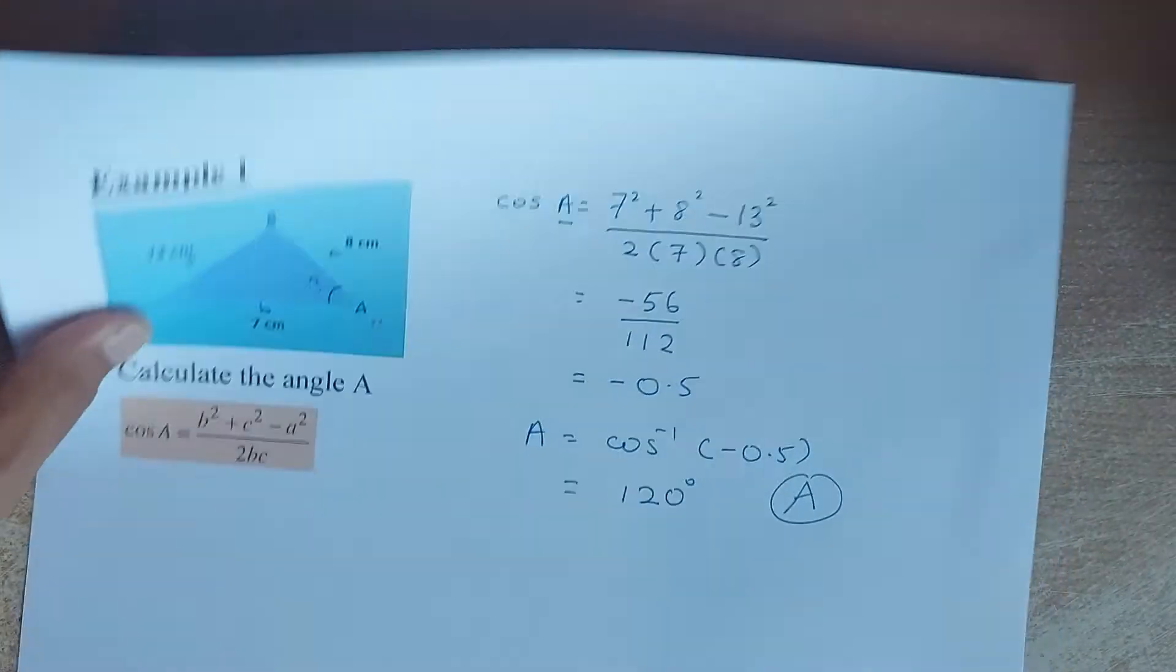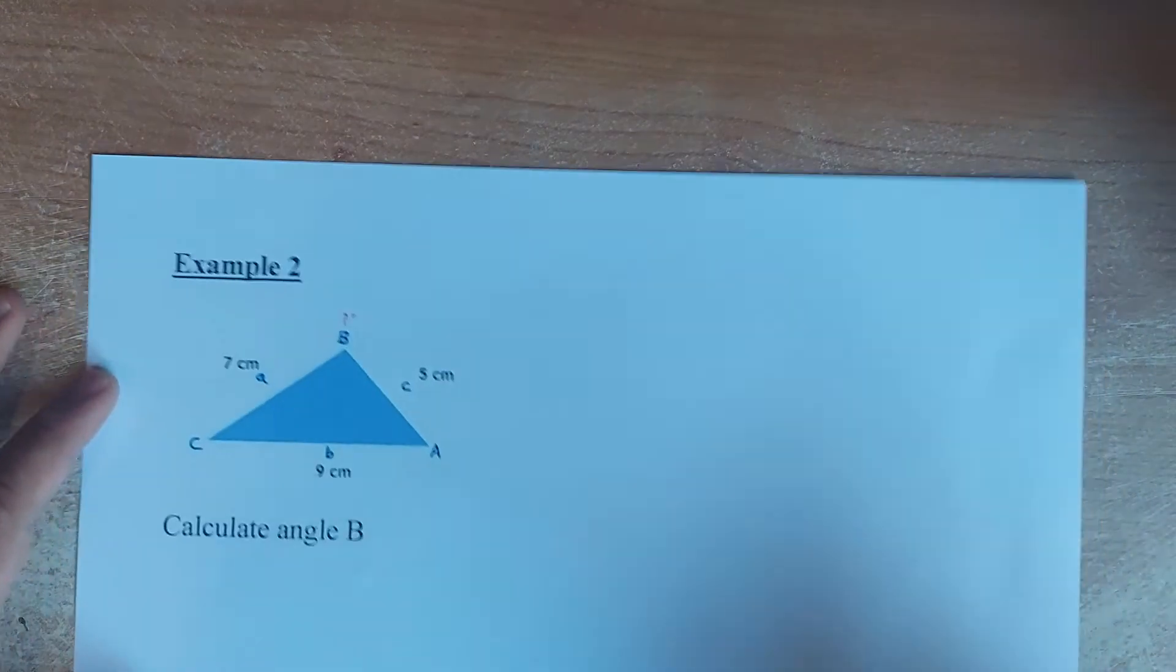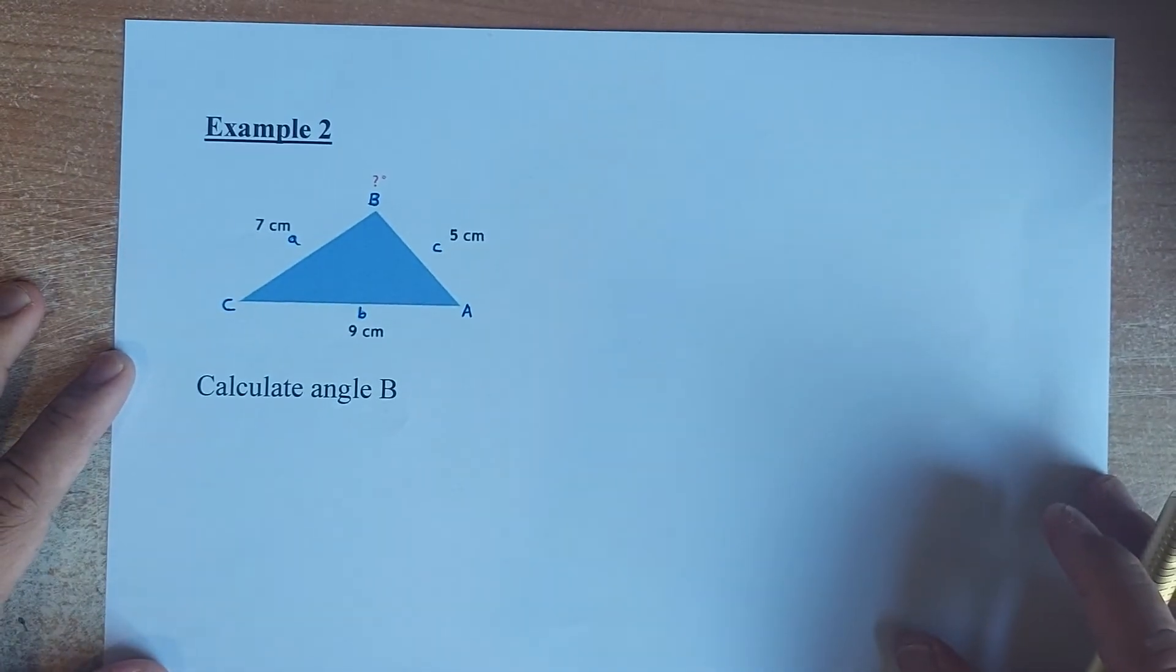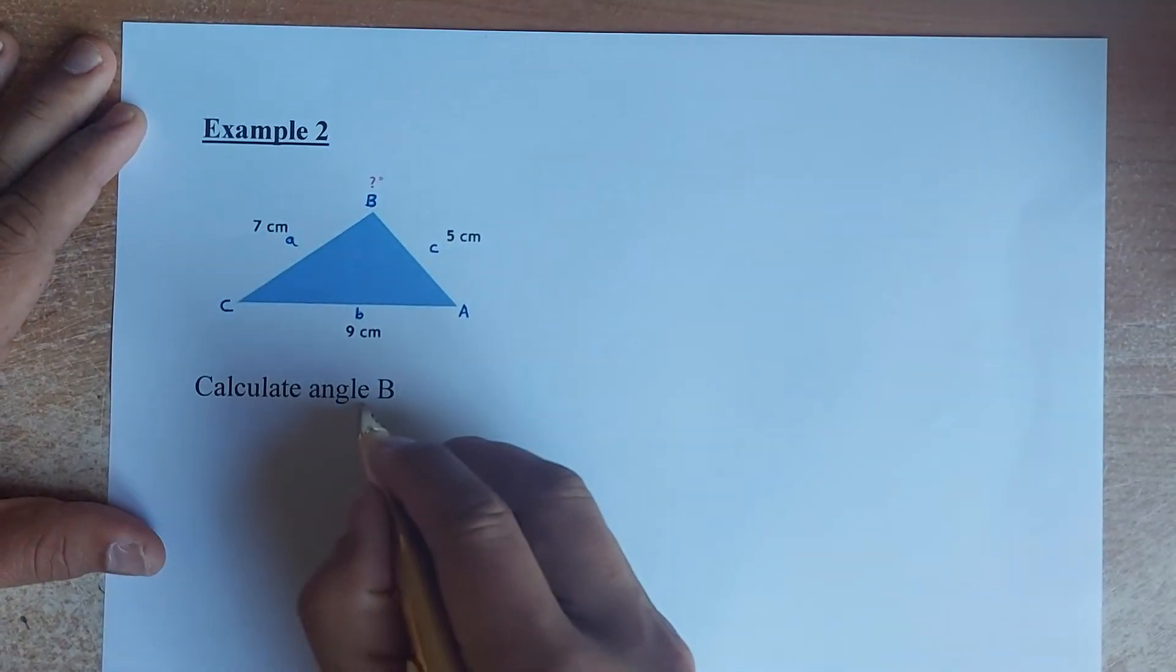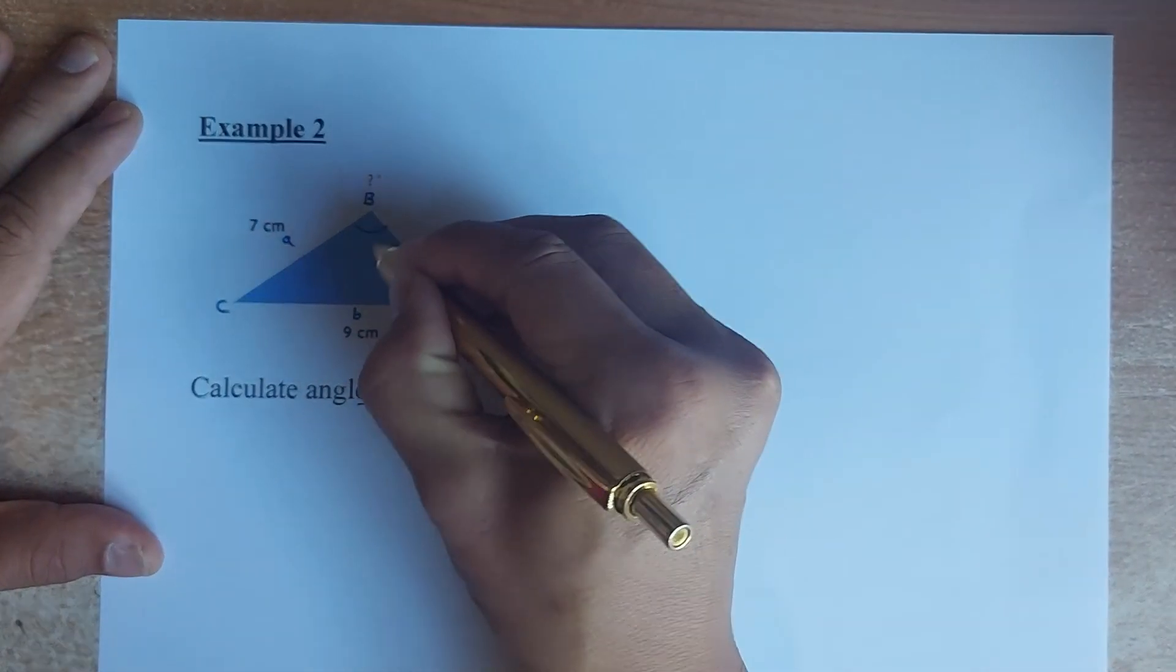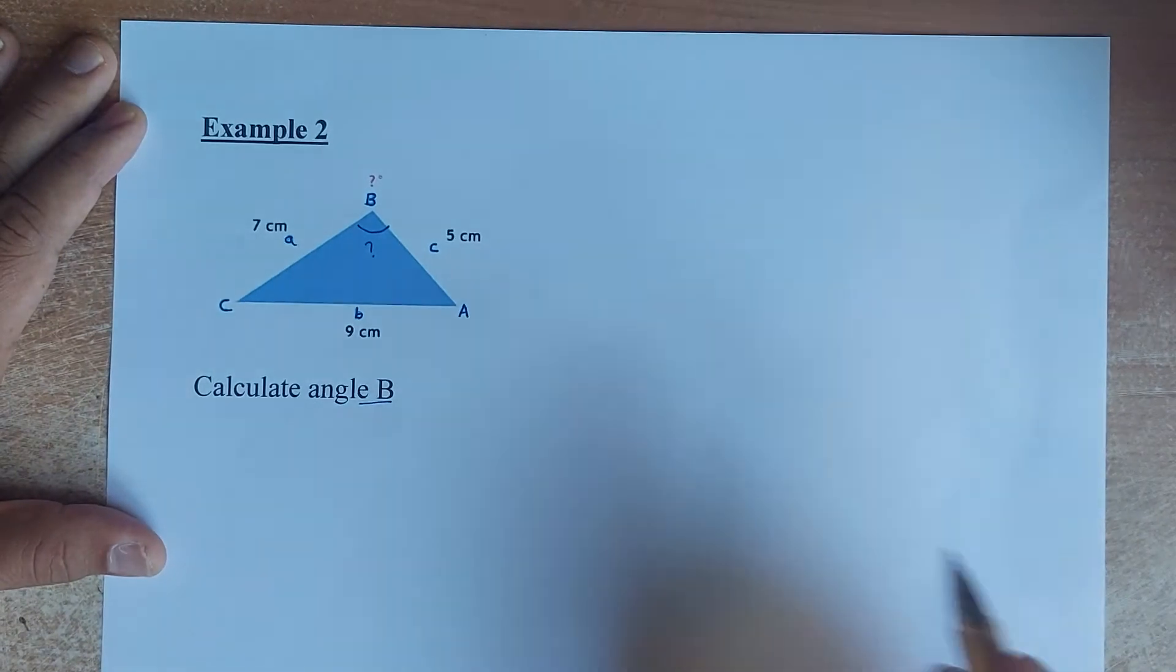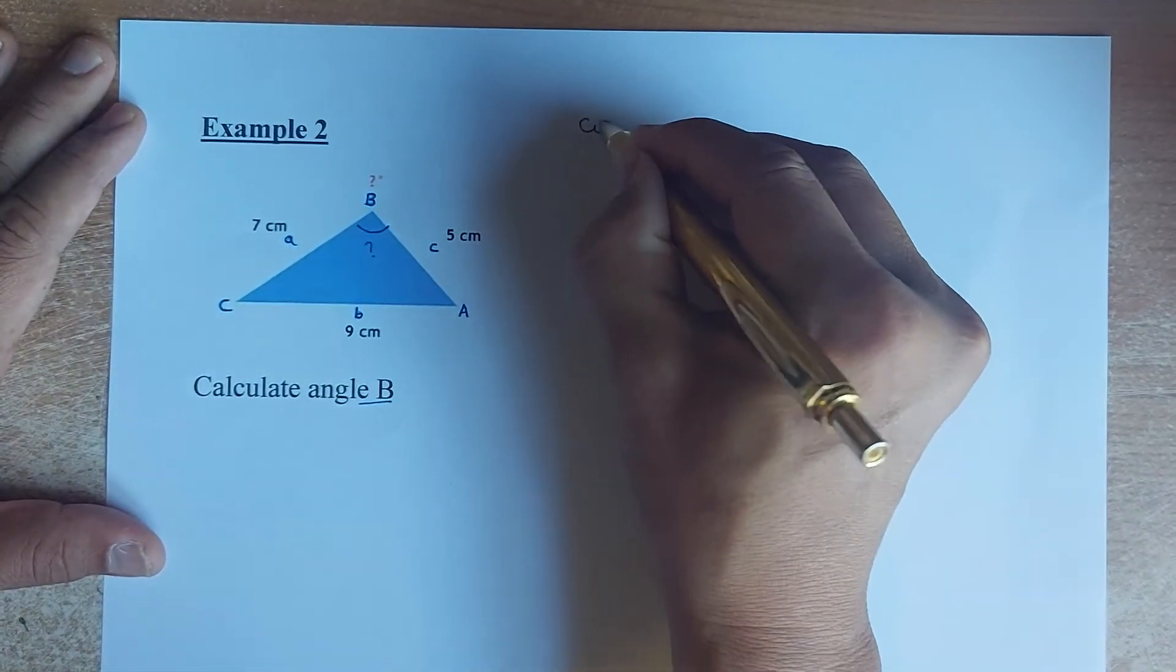We shall look at another example. A different triangle with different numbers. So now this is example 2. So again, we have A, B, C. This time we are looking for angle B. So this is the angle we want to find.